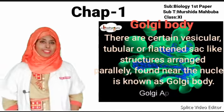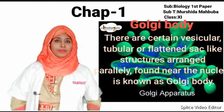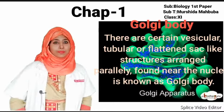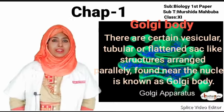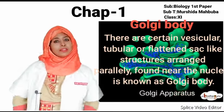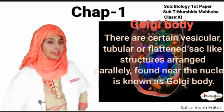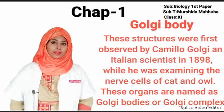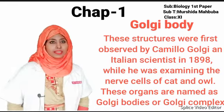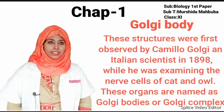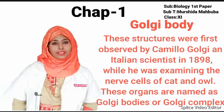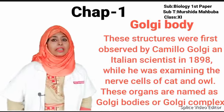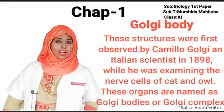Golgi body: There are certain basin, tubular, or flattened sac-like structures that rest parallelly and are found near the nucleus, known as the Golgi body. These structures were first observed by Camillo Golgi, an Italian scientist, in 1898, while he was examining the large cells of a cat.